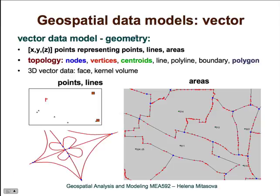So how does the vector data model look like? Its main part is the representation of geometry, and geometry is represented by points. These points are organized either as single points, or as points that are representing lines, organized as lines, and areas. Areas are represented by lines and centroids.